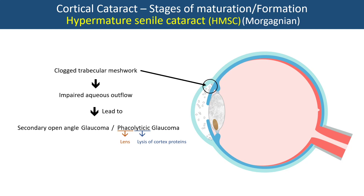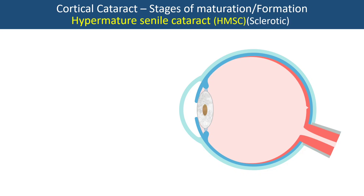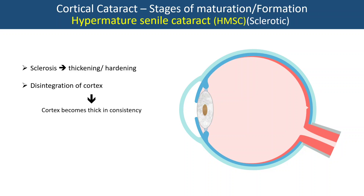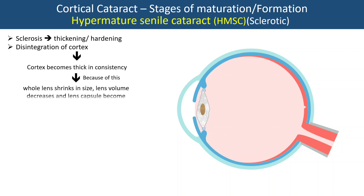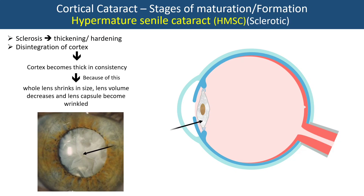The other type of hypermature cataract is sclerotic hypermature cataract. Here, sclerosis means thickening or hardening. Unlike Morgagnian cataract where cortex proteins liquefy, in sclerotic cataract the cortex disintegrates and turns thick in consistency. As a result, the whole lens shrinks in size, lens volume decreases, and the lens capsule becomes wrinkled — visible on slit lamp examination. This gives a dirty white appearance with an opacified, wrinkled capsule.